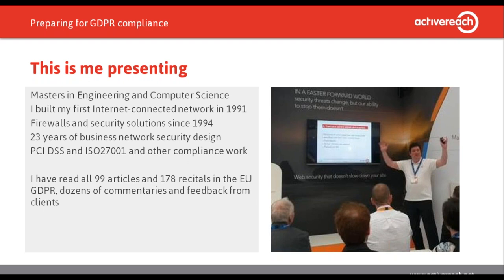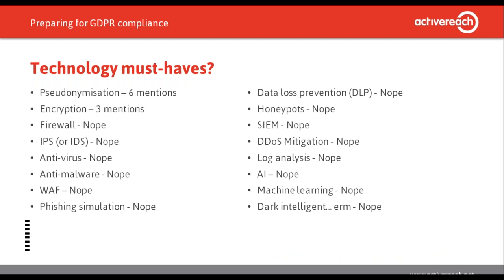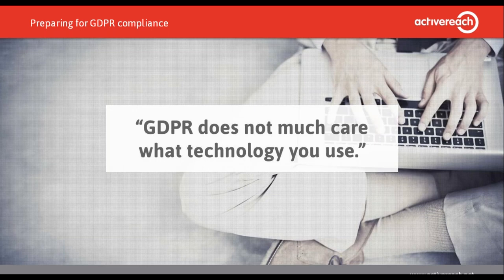This is how often common security technologies appear in the text. Notwithstanding numerous white papers from technology vendors, the law itself doesn't care much what technology you use. Most security technologies and specific threats to data are conspicuous by their absence in the text. The law is tolerant to changes in technology best practice and the threat landscape, but it also means you have no idea where to start, where to stop, and what order to do things in.